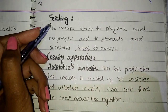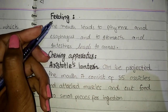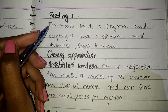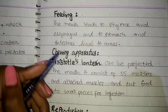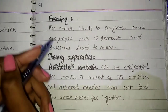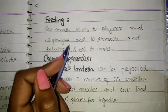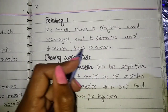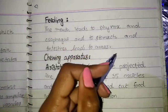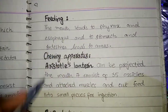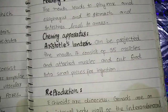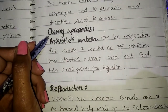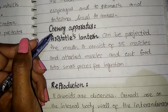Now we are looking at the feeding process in echinoderms. The mouth leads to the pharynx and esophagus, then to the stomach and intestine, which leads to the anus. This is a simple digestive arrangement common to all organisms.